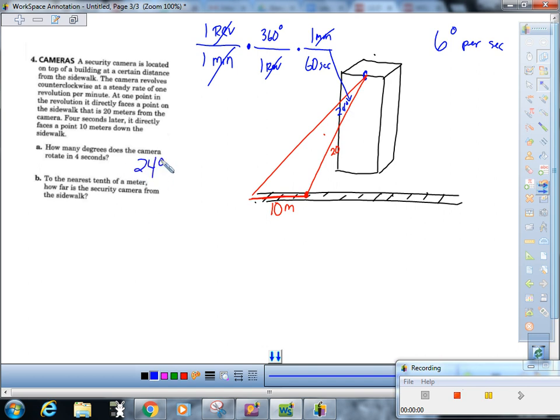Yeah okay, part B: to the nearest tenth of a meter, how far is the security camera from the sidewalk? Well this is what we just had our big debate about. We think they want that distance, the shortest distance, which makes this a right angle here. Okay, so we're gonna do something like that. This is what we're looking for.